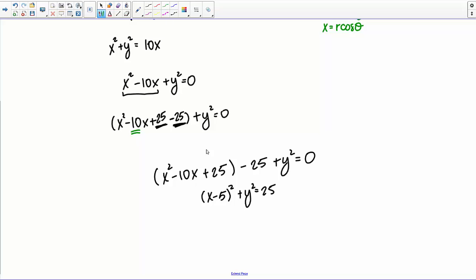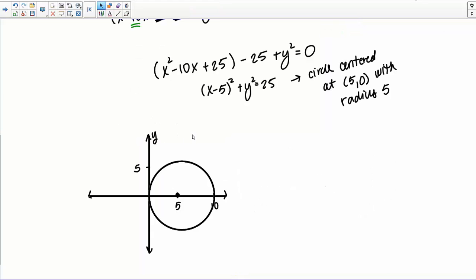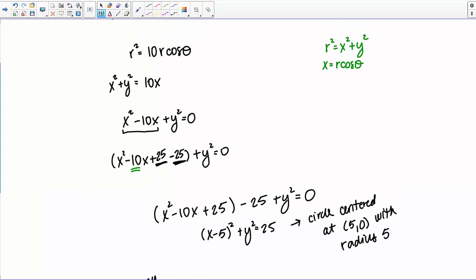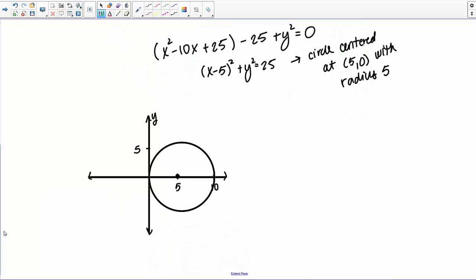Now hopefully you recognize this, this is the equation of a circle in Cartesian coordinates. And specifically, it's a circle centered at the point (5,0) with a radius of 5. So this circle that I've drawn here.